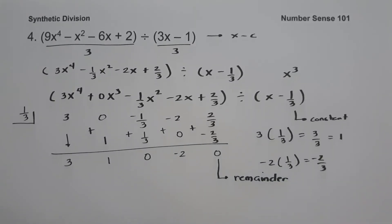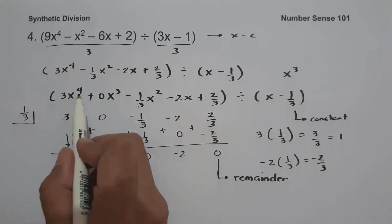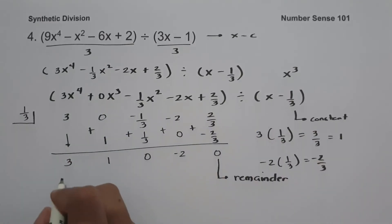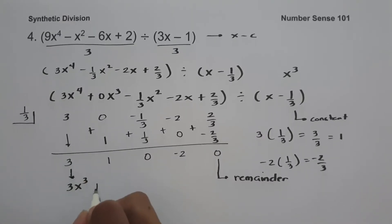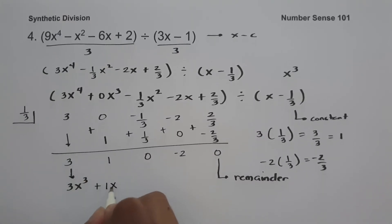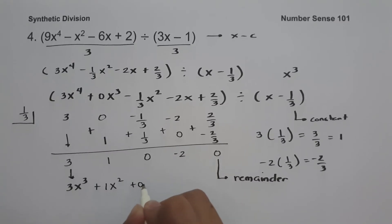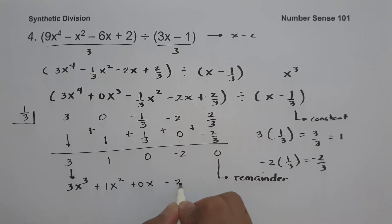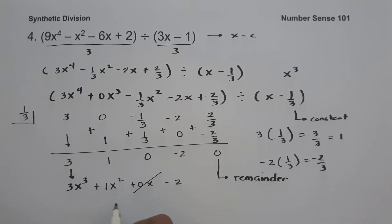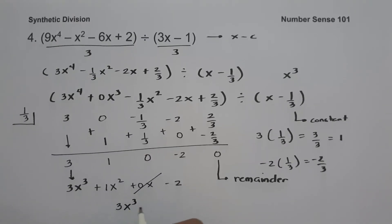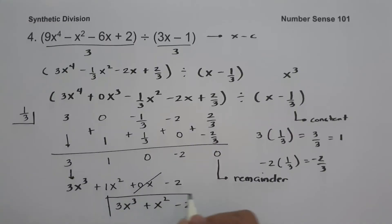To write our answer, we have 3x to the 4th divided by x, which is 3x cubed with coefficient 3. Then 1, x squared, plus 0x minus 2. Since the coefficient of x is 0, we cancel that term, giving us 3x cubed plus x squared minus 2. And this will be our answer.